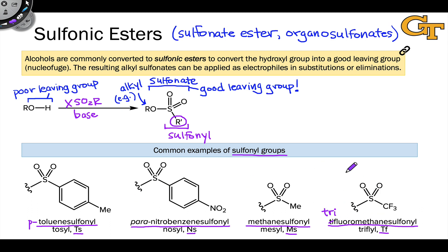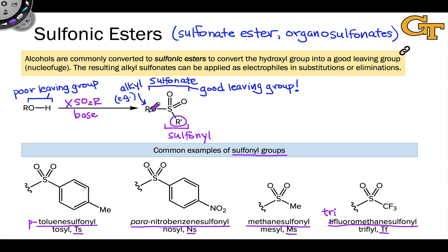You'll see all four of these groups in organic structures. They all serve the same fundamental purpose of withdrawing electron density from the alcohol oxygen and setting up a good leaving group in the form of a sulfonate. All four, when linked to an oxygen atom, set up a good leaving group in a sulfonate anion.